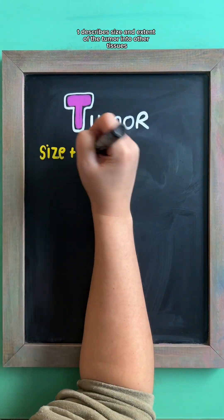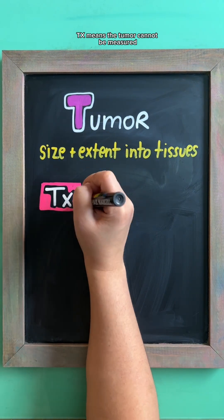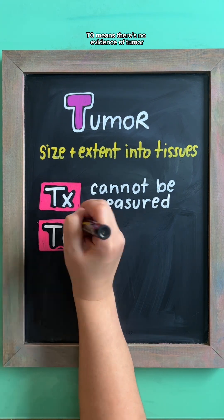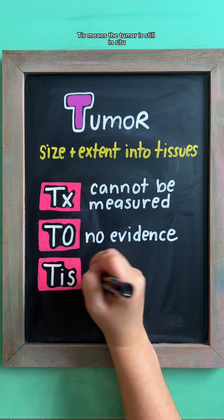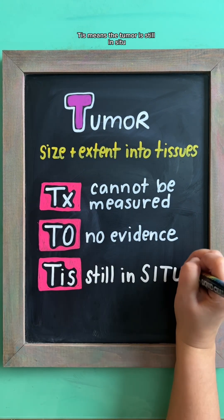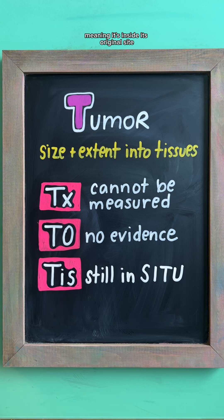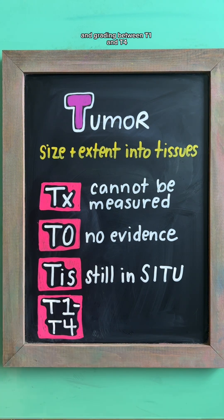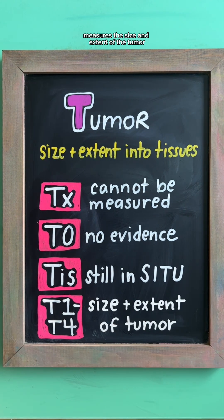T describes the size and extent of the tumor into other tissues. TX means the tumor cannot be measured. T0 means there's no evidence of tumor. TIS means the tumor is still in situ, meaning it's inside its original site. And grading between T1 and T4 measures the size and extent of the tumor.